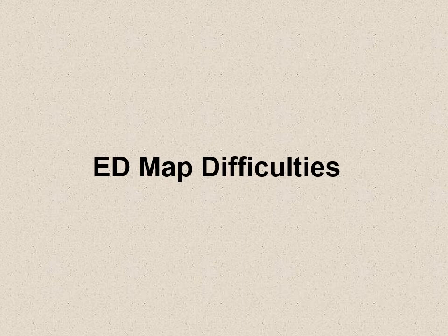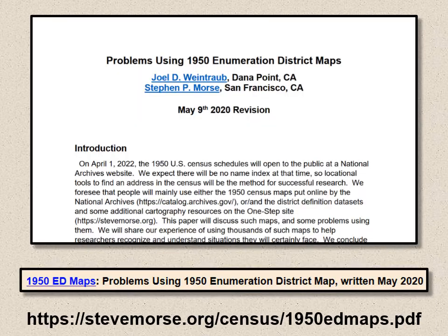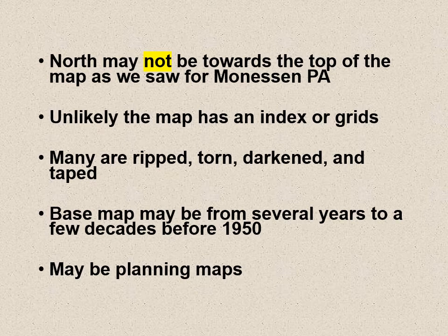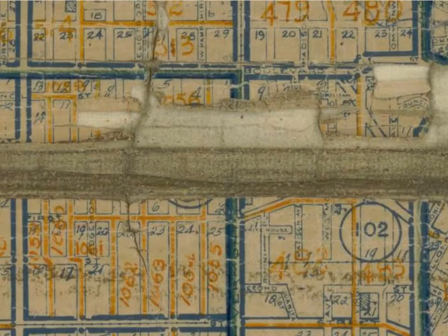There are going to be ED map difficulties. If you think this map looks like a conventional Google map or what service stations used to give you, think again. Steve and I wrote an essay on problems using these district ED maps, and you can find it on the One-Step website. North may not be towards the top of the map, as we saw from Monessen, Pennsylvania. It's unlikely the map has a street index or any grids. Many maps are ripped, torn, darkened with age, or taped. The base map may be from several years to a few decades before 1950. They may be planning maps where some streets were never even built.